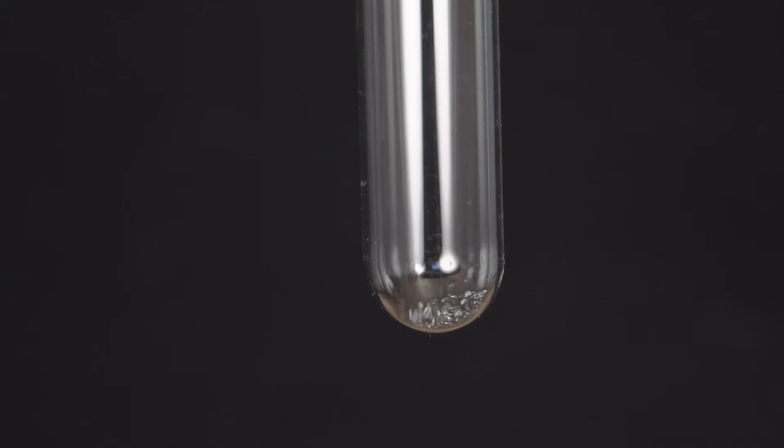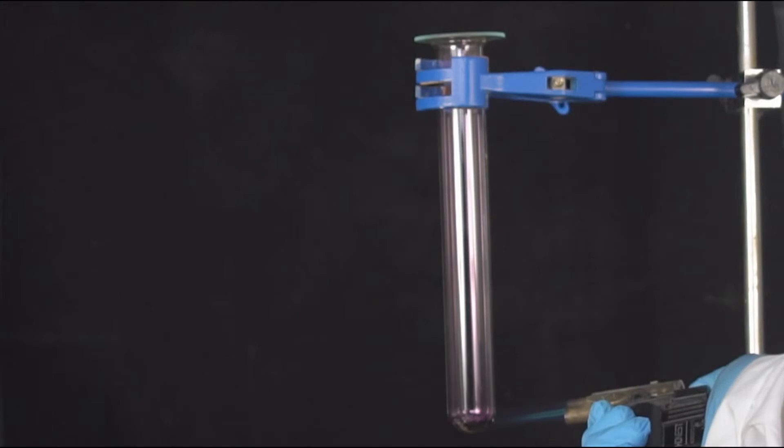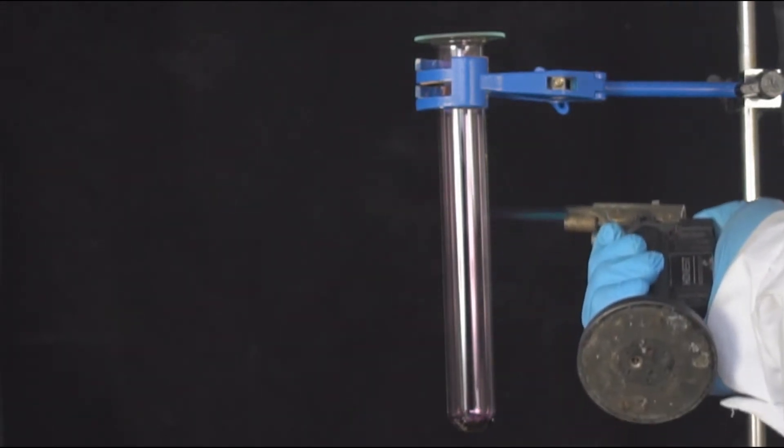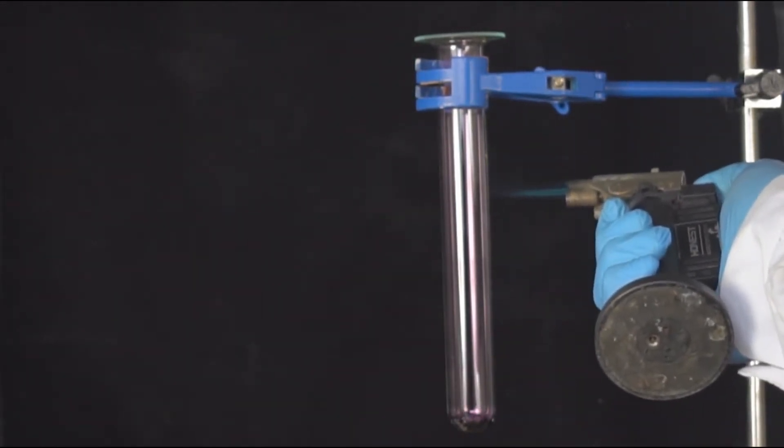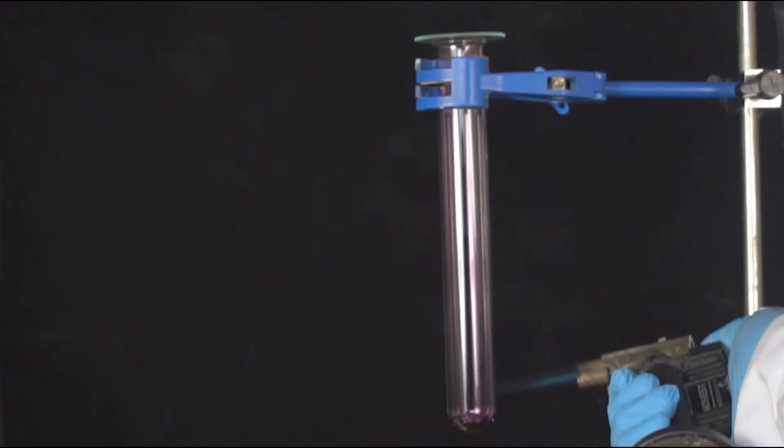For the reaction, I add a crystalline iodine in the test tube. Then let's warm up our test tube along the length in order to get rid of condensate from the walls and melt the iodine.